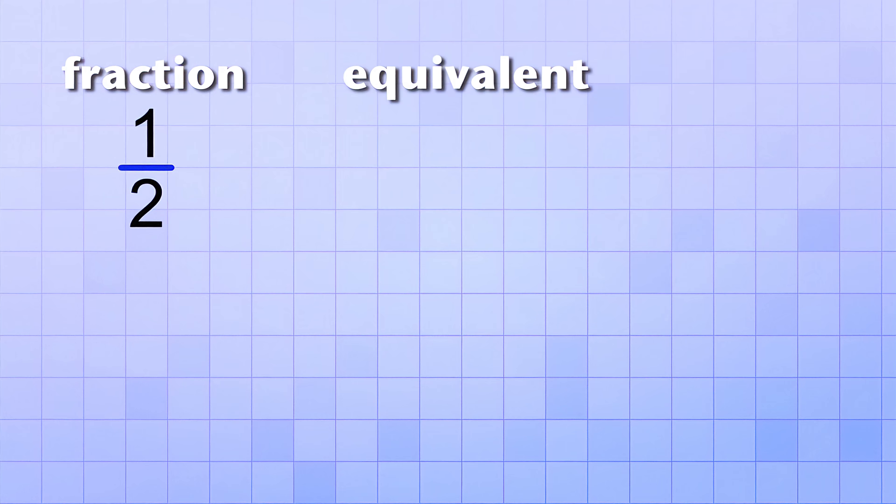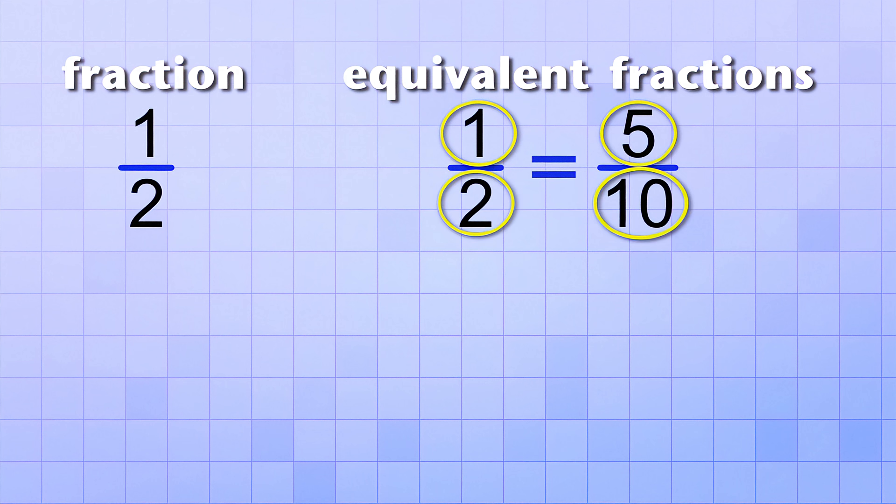Now let's look at a pair of equivalent fractions, 1 over 2 and 5 over 10. These fractions are equivalent because even though they have different top and bottom numbers, they have the same value. 1 is half of 2 and 5 is half of 10, so they represent the same amount.